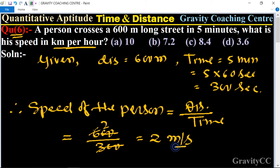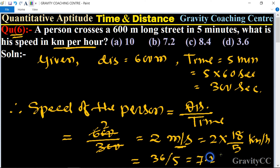And its speed in kilometer per hour, so now it is multiplied by 18 upon 5. This is equal to thirty-six upon five, which is equal to 7.2 kilometer per hour. This is the required answer, so option B is the correct answer.